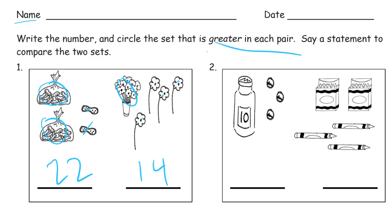And it says circle the set that is greater in each pair. So that's this one. I circled my 10 groups because I've been used to doing that, I've been practicing that a lot. You don't have to keep doing that, but it's okay to circle your 10 groups as long as you circle the whole set. In my statement to compare the two sets, I'm going to say 22 is greater than 14.